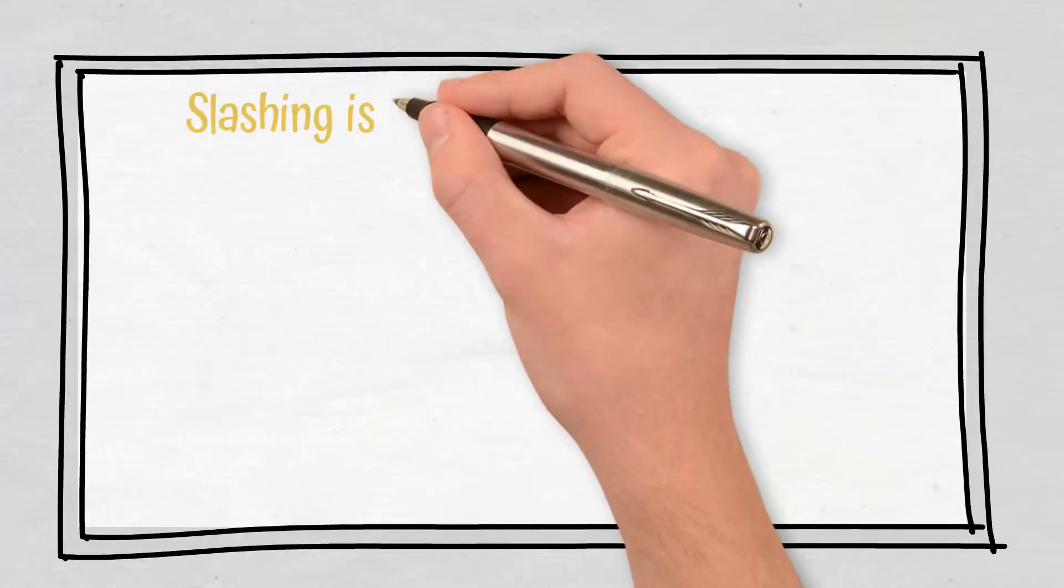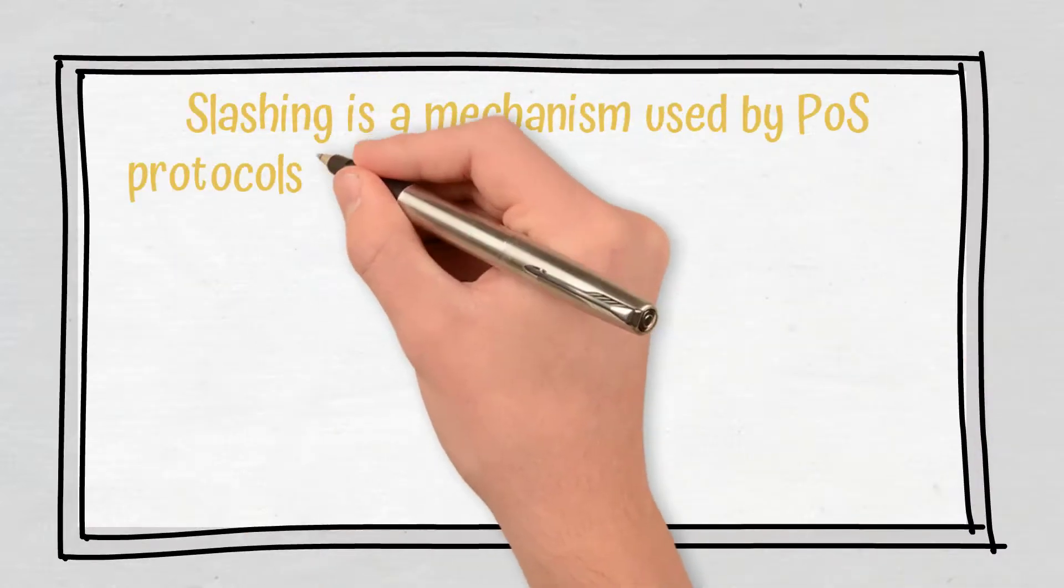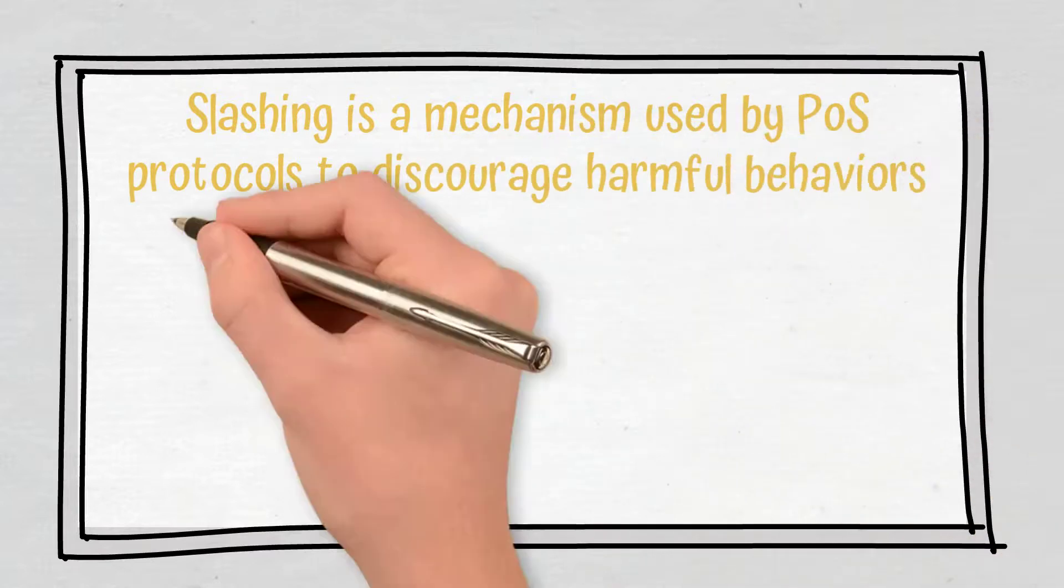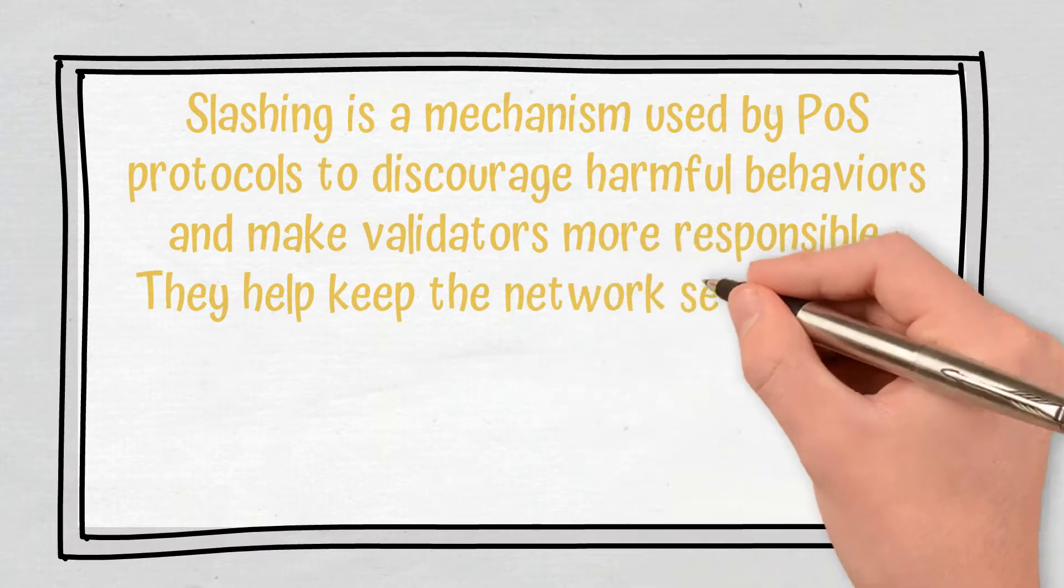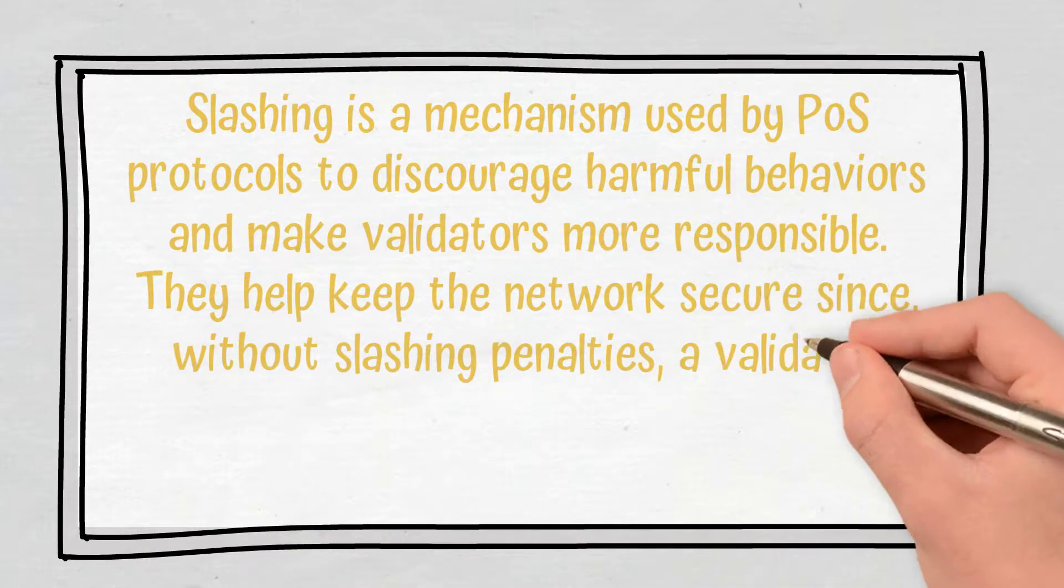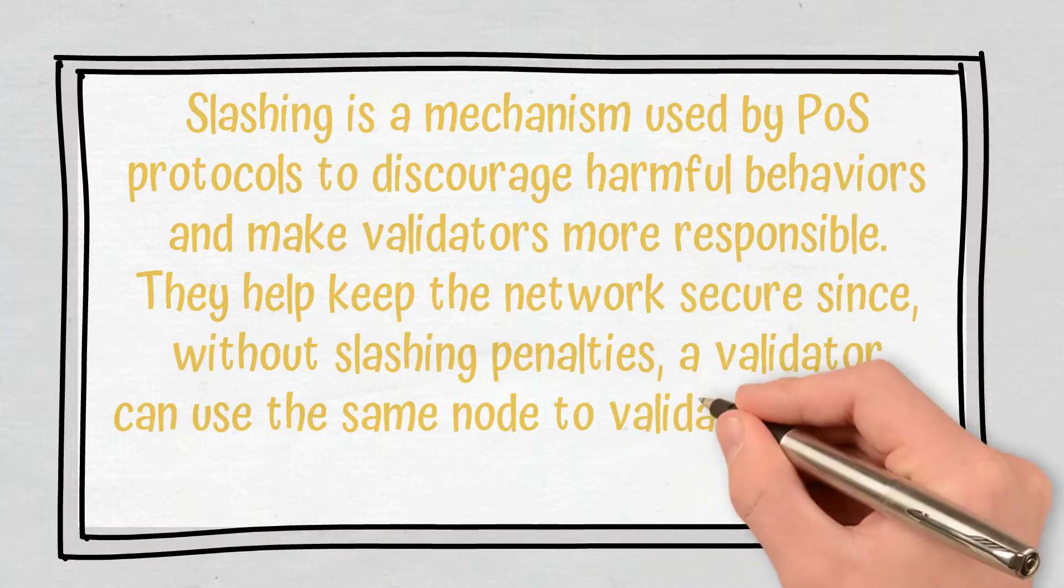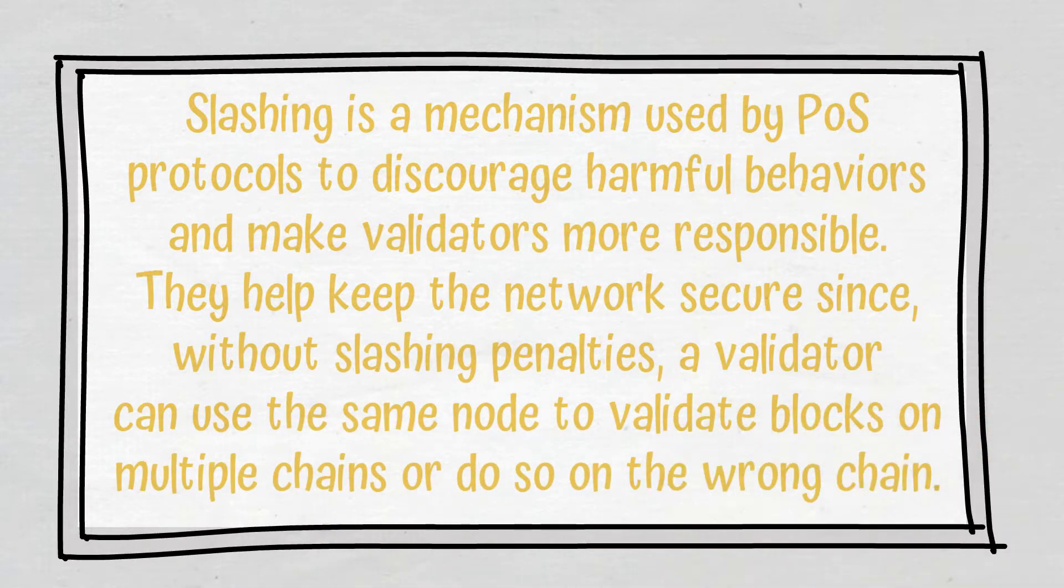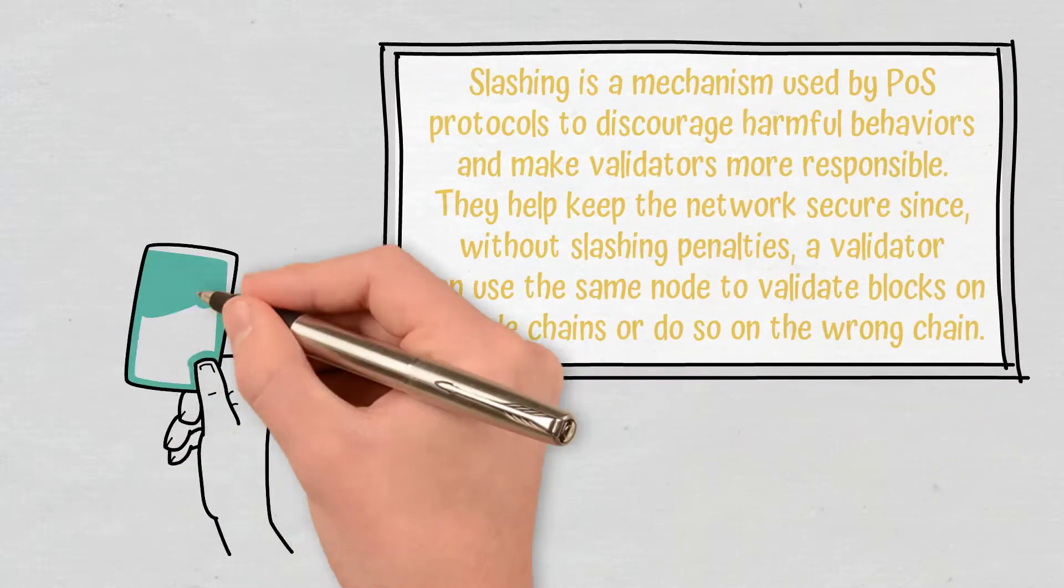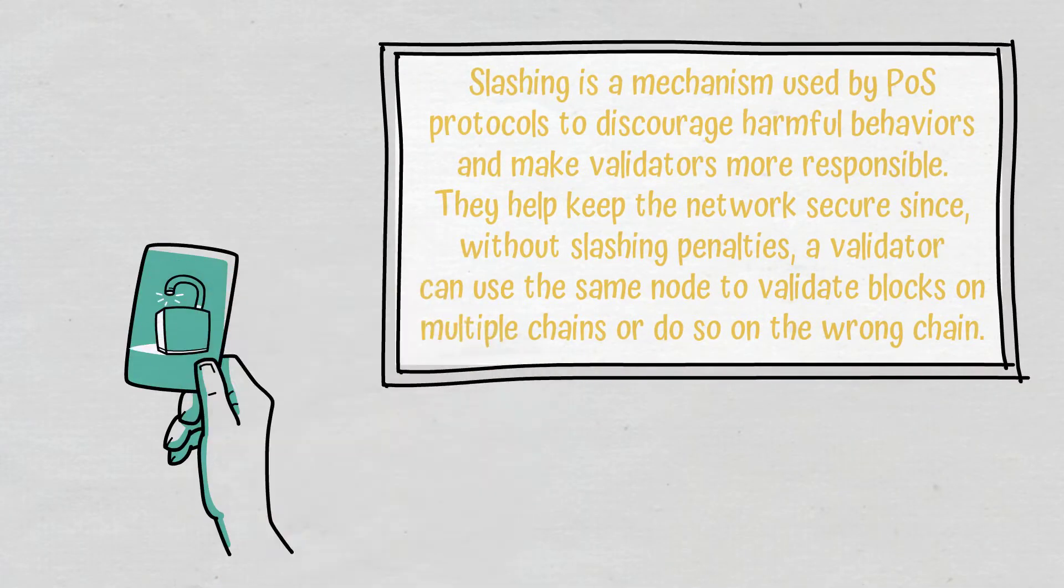Conclusion: Slashing is a mechanism used by proof-of-stake protocols to discourage harmful behaviors and make validators more responsible. They help keep the network secure since, without slashing penalties, a validator can use the same node to validate blocks on multiple chains or do so on the blockchain. Proof-of-stake protocols that don't have slashing penalties are considered less secure.